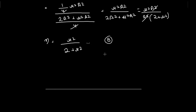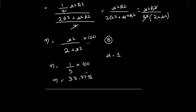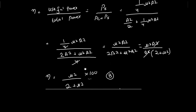The maximum efficiency we can achieve is when μ = 1, i.e., when the modulation index equals 1. Substituting μ = 1 gives 1/(2 + 1) = 1/3. Expressed as a percentage, this is 1/3 × 100 = 33.3%. So the maximum efficiency of an amplitude modulated signal in tone modulation is 33.33%. Practically, this efficiency is even less — around 25%.